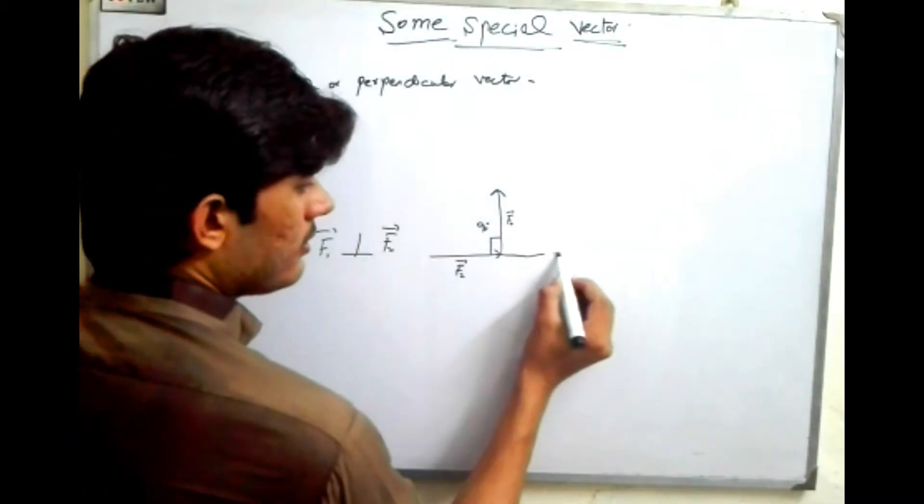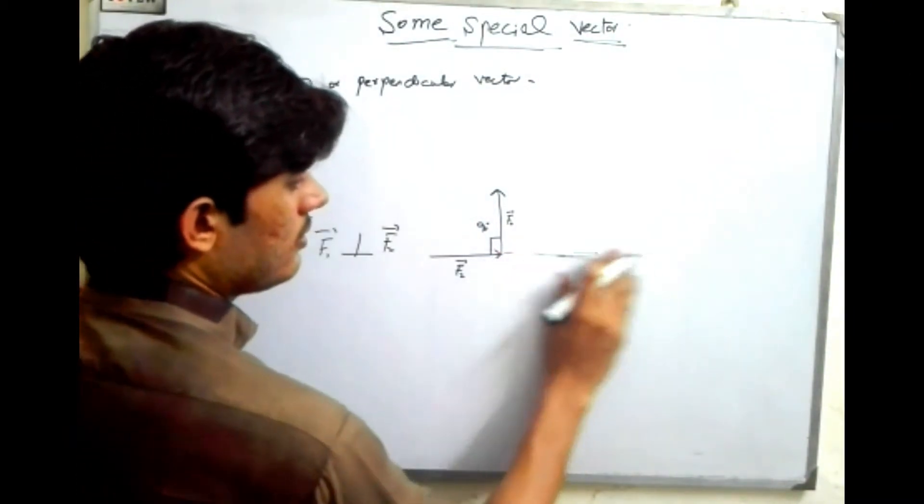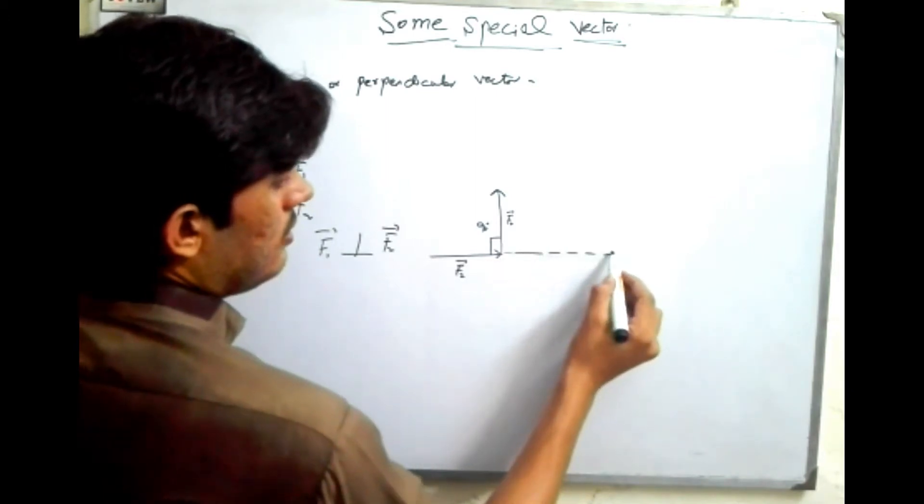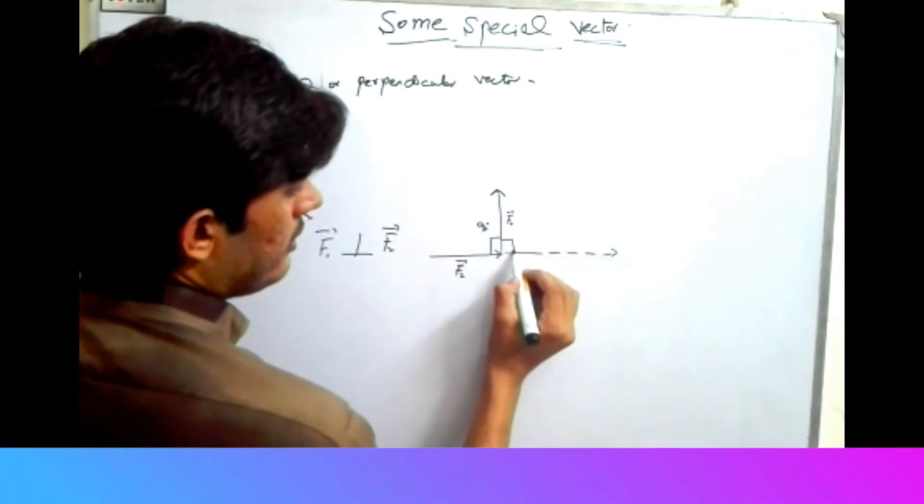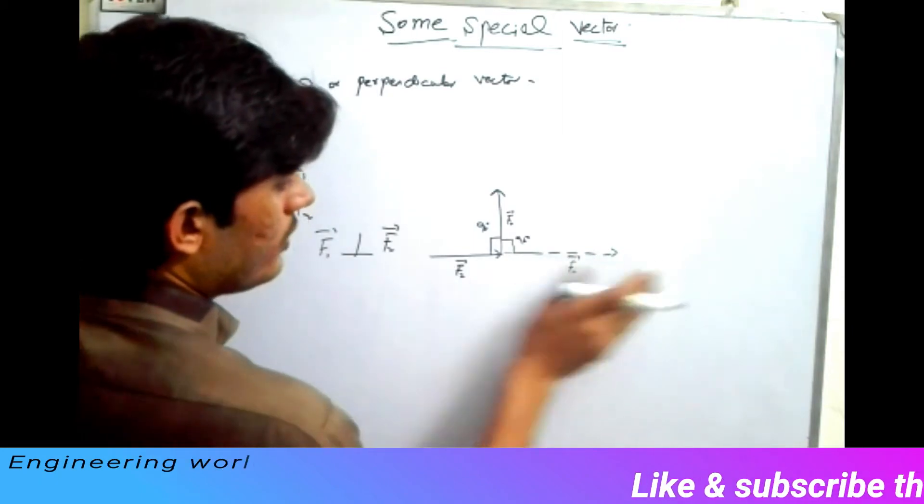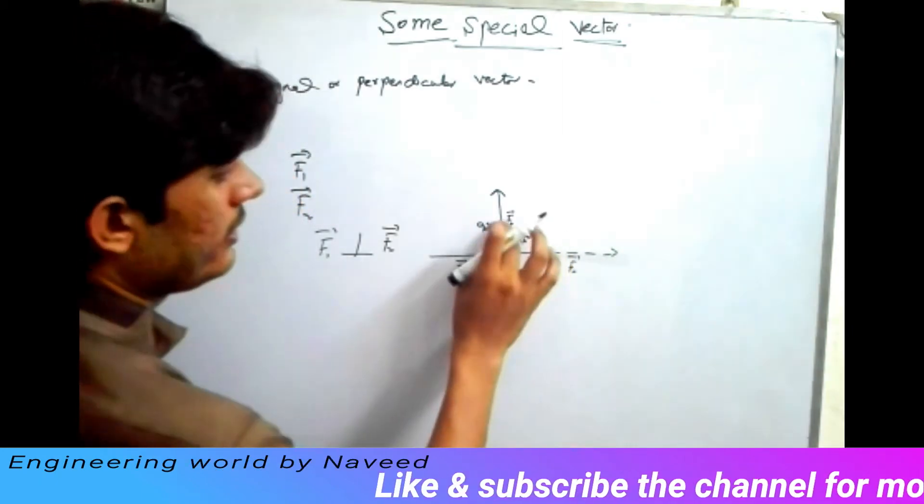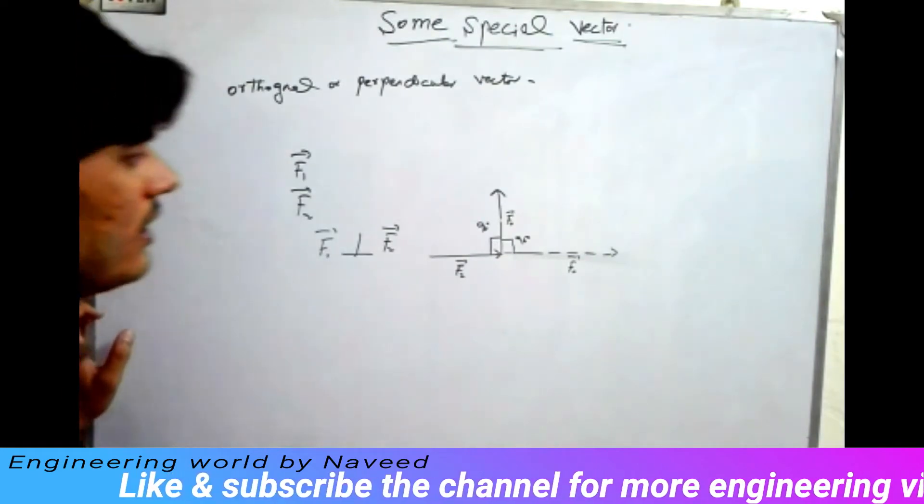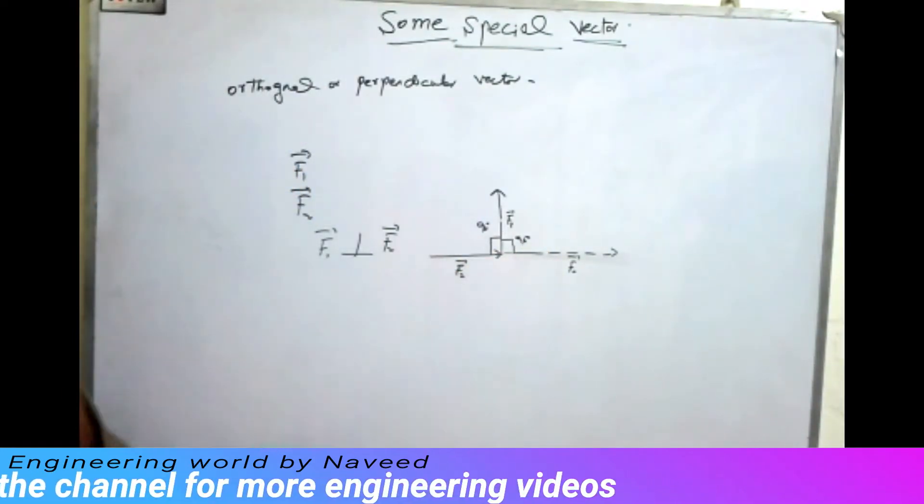Or you can represent it by this: as here it also makes an angle of 90 degrees if you extend f2 further, so it also makes an angle of 90 degrees with f1, so that's why these two vectors are orthogonal.